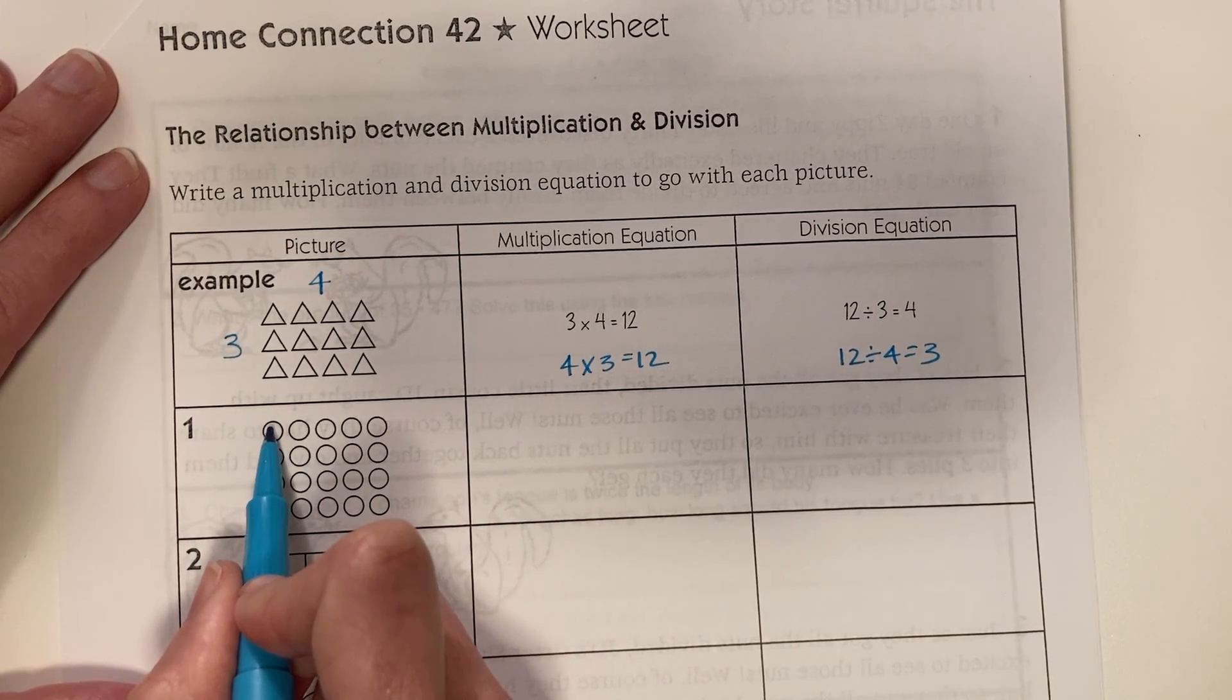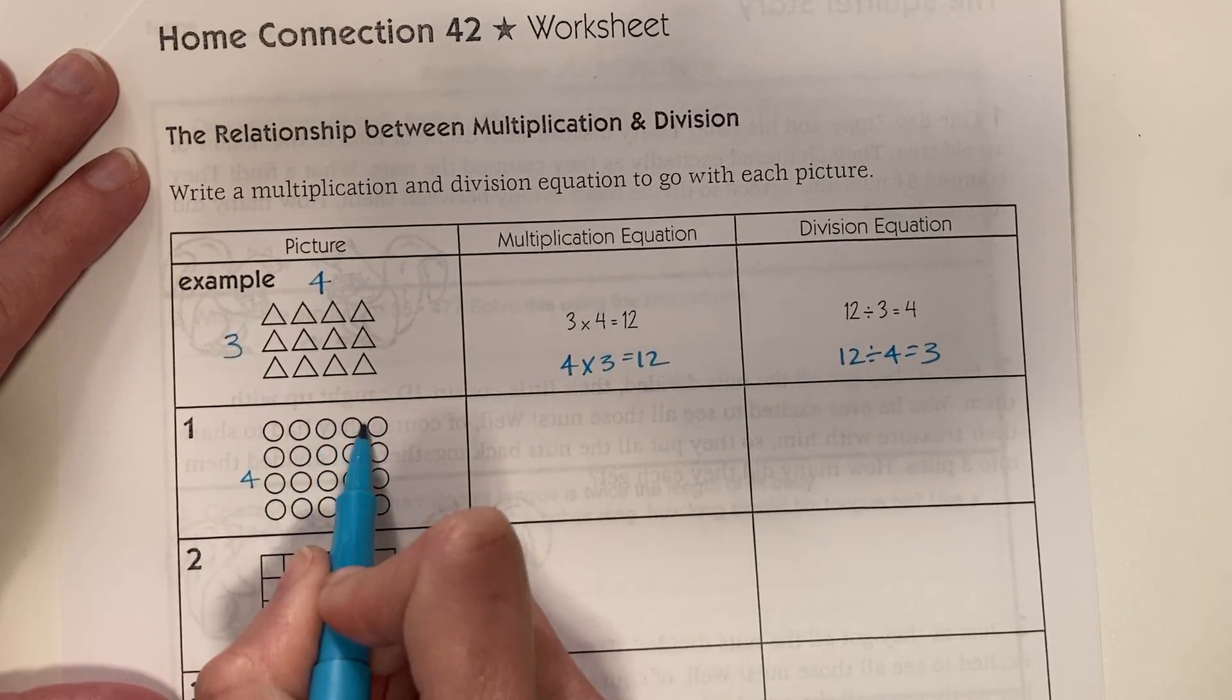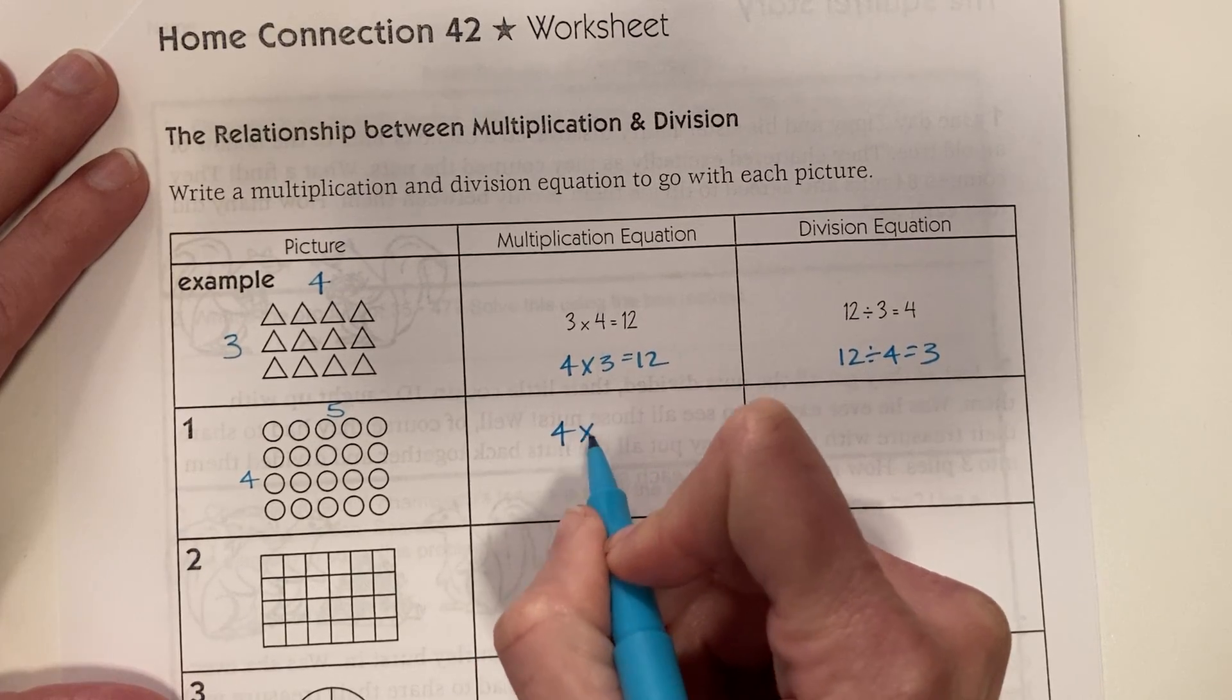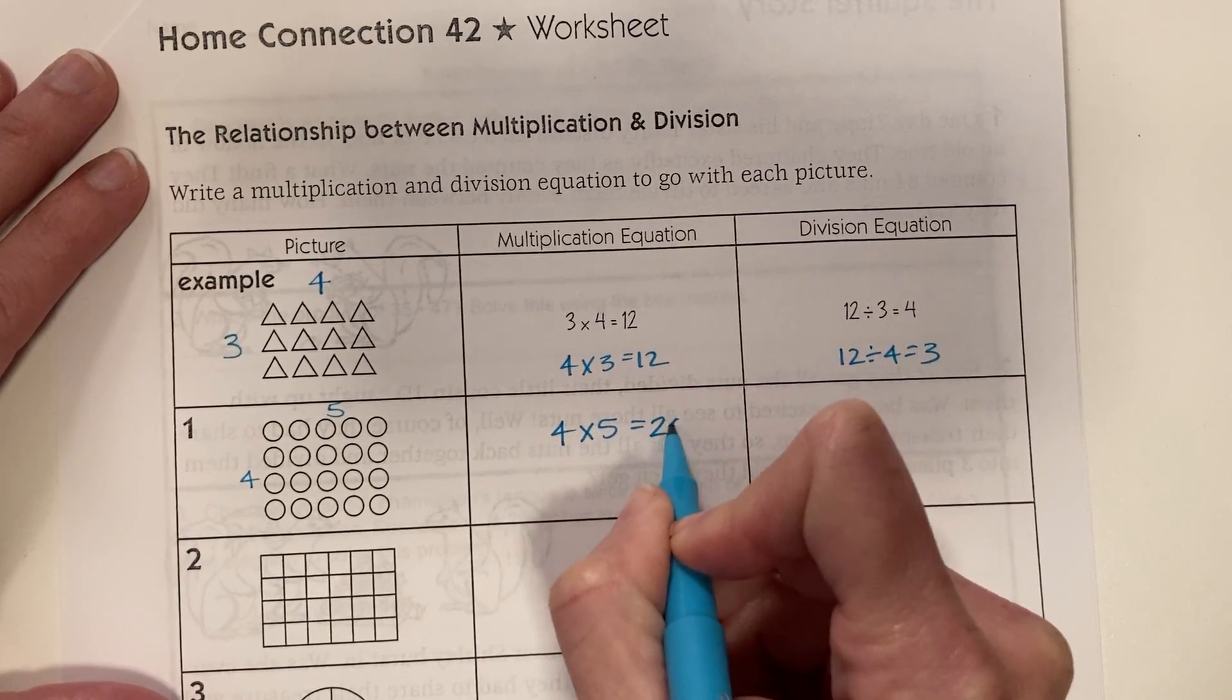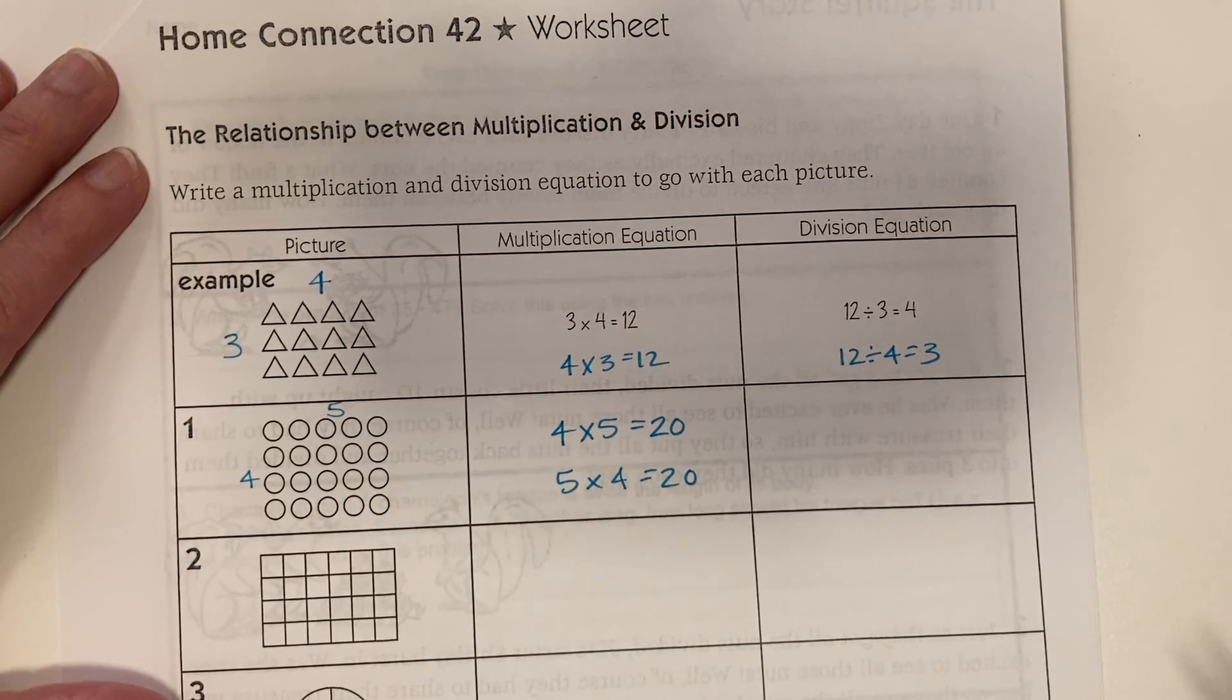So you just want to count how many are going down: 1, 2, 3, 4 circles by 1, 2, 3, 4, 5 circles. So you can do 4 times 5 equals 20 circles or you're totally welcome to say 5 times 4 equals 20. Both are correct.